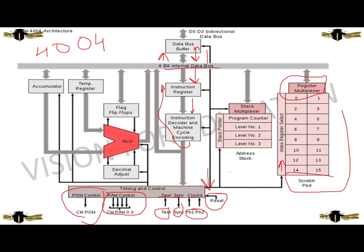The index register is connected to the stack register, also known as the stack multiplexer. The stack multiplexer consists of a program counter, which is divided into three levels: level 1, level 2, and level 3, also known as stack pointers. This processes the data to the time controlling unit. Time controlling processes data to the accumulator, which is used to perform all arithmetic and logical operations, and processes the data to the temporary register.